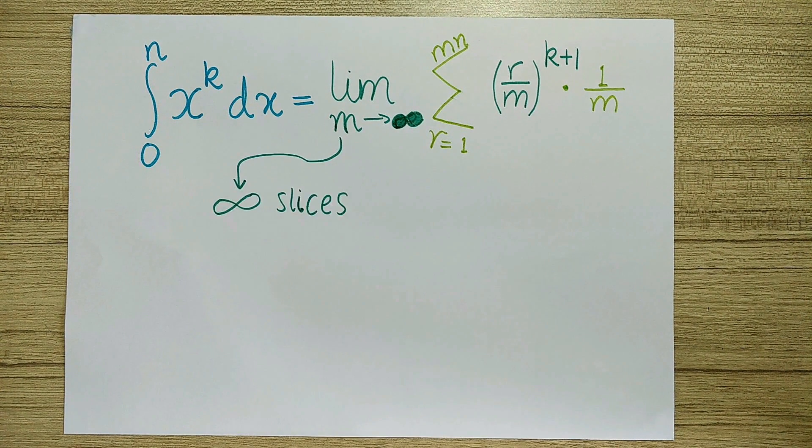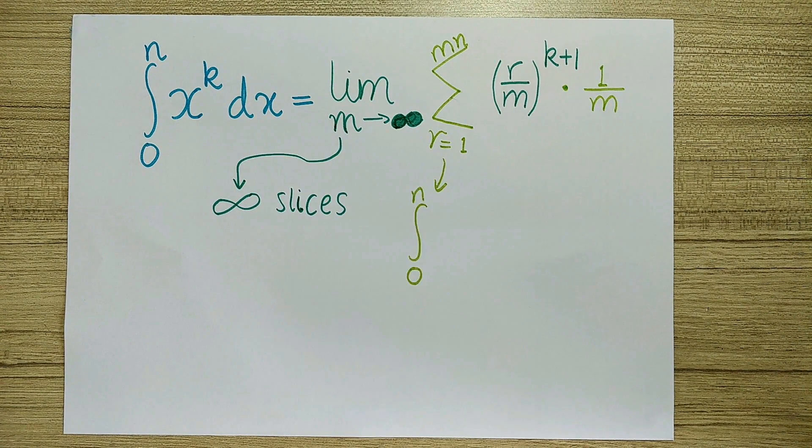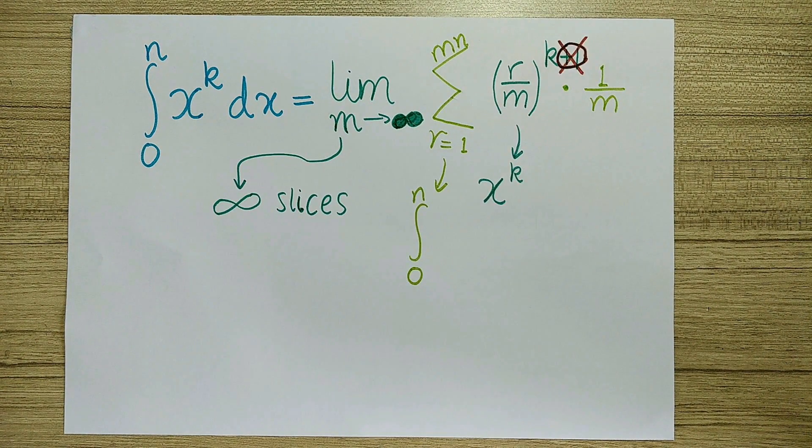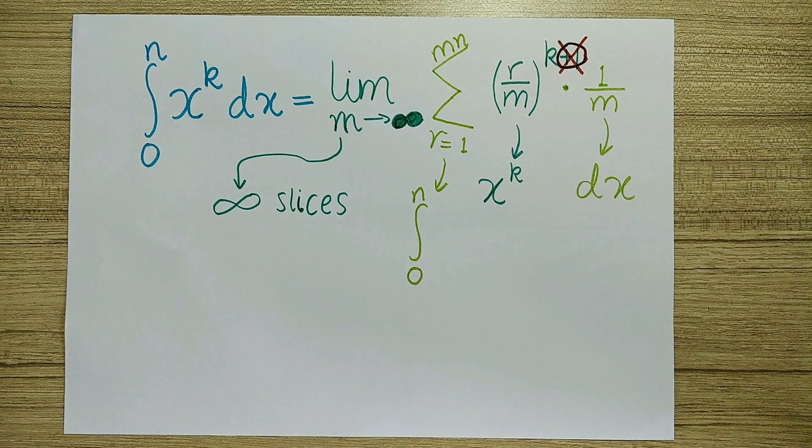The limit as m goes to infinity is just to say that the number of slices goes to infinity. The summation symbol is just the integral symbol in disguise. r over m to the k is our function which we are integrating x to the k, and 1 over m is the width of each slice dx.